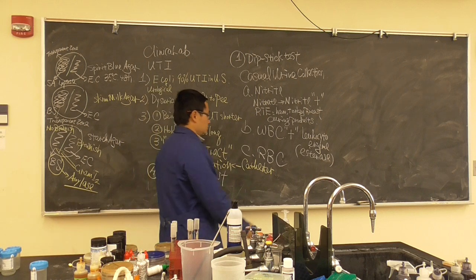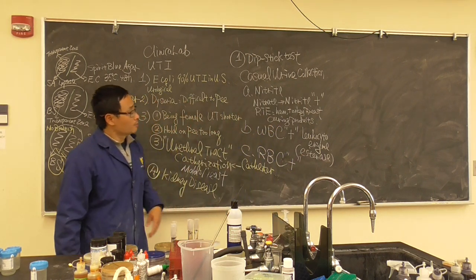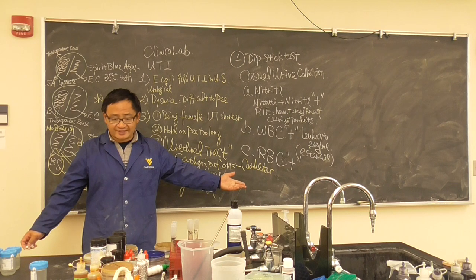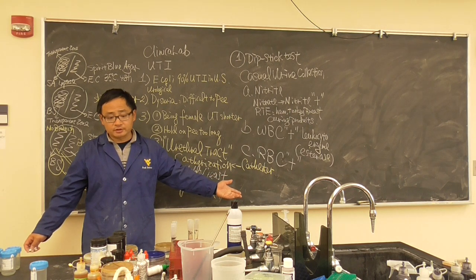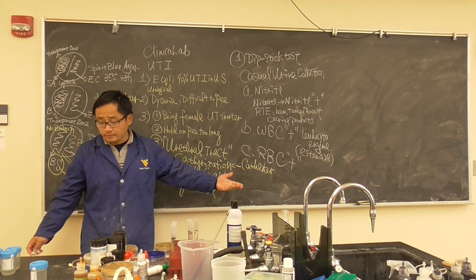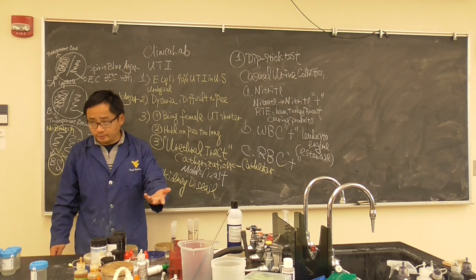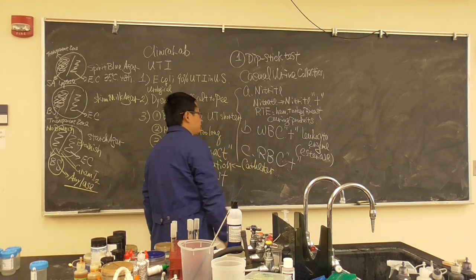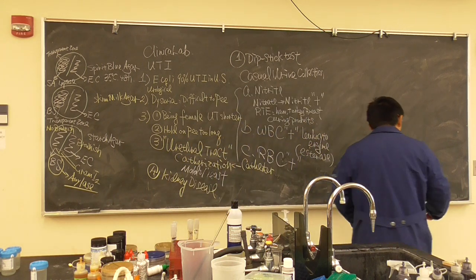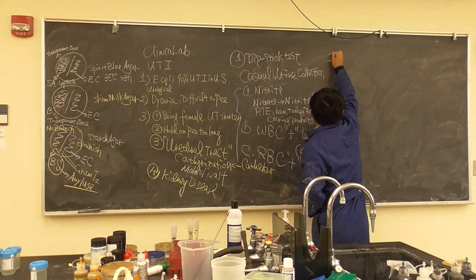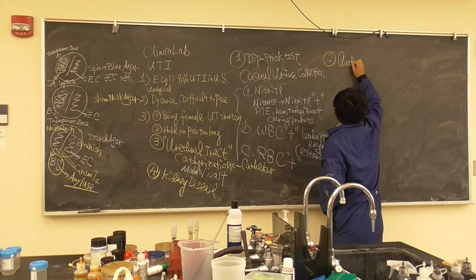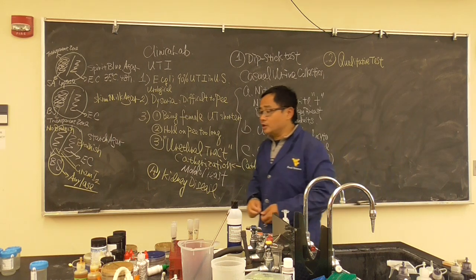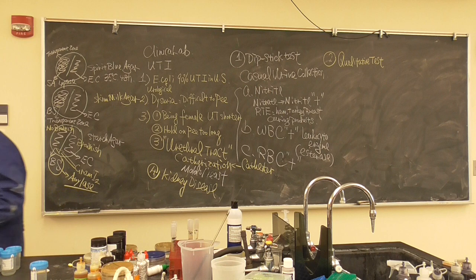Red blood cells in the urine sample may indicate urinary tract infection — but be careful, because around 30–40% of females may naturally show a red blood cell positive for unknown reasons. So red blood cells alone are not necessarily conclusive. These are the three items tested first at the hospital. If any of these are positive, we move on to the next stage: the qualitative test.